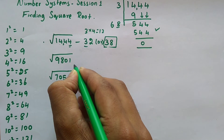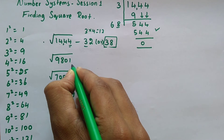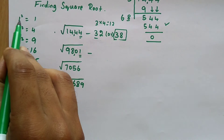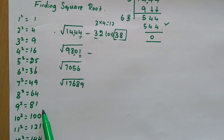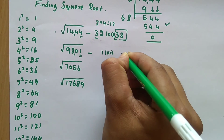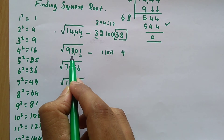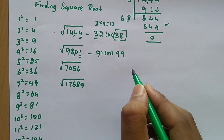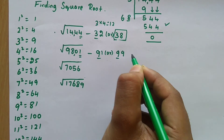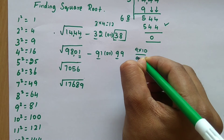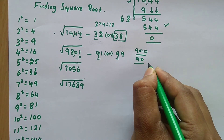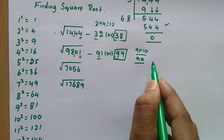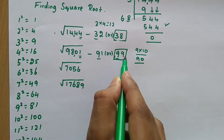For 9801, follow the same steps. Divide from the right into groups of two: '01' at the end and '98' at the front. The last digit is 1. Multiplying 1 x 1 gives 1, or 9 x 9 = 81, ending in 1. So the last digit is 1 or 9. The perfect square below 98 is 81, and its square root is 9. So the number is 91 or 99. Next number after 9 is 10, so 9 x 10 = 90. Since 90 is less than 98, the greater number is the answer: 99.